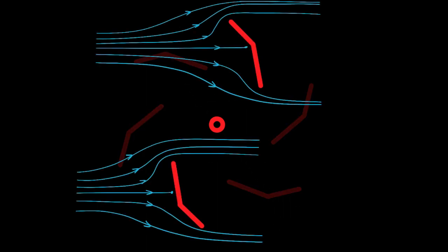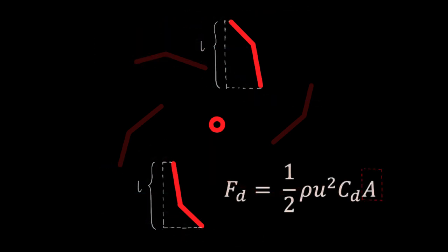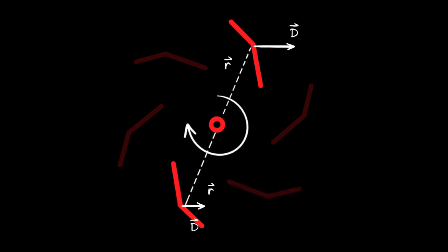The blades at a very high angle of attack can be approximated as bluff bodies, where drag dominates. Looking at this pair of blades, the frontal area is the same, but the drag coefficient of the top one is higher, thus creating a net moment also going clockwise.